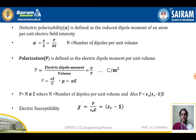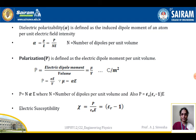Polarization P is defined as electric dipole moment per unit volume: P = μ / V, with units of coulombs per meter squared (C/m²). Therefore P = n · α · E, where n is the number of dipoles per unit volume. Also, P = ε₀ · (εᵣ − 1) · E.